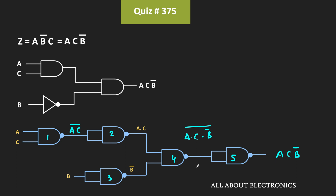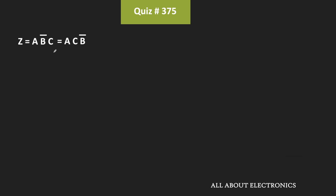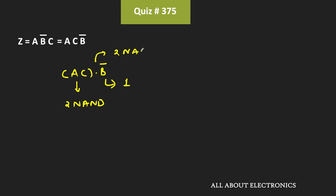Let us write the same expression differently: AC·B̄. To implement the AND operation of A and C, we require two NAND gates. To implement the inverting operation for B̄, we require one NAND gate. And to perform the AND operation between AC and B̄, we again require two NAND gates.